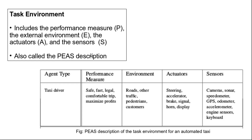If we take the example of an agent which drives a taxi, let's try to understand the PEAS description for this agent. The performance measure for this agent would be how safely the agent is driving, how fast the agent is driving, whether the agent is following the traffic rules or not, and whether it is providing a comfortable trip to its customer.